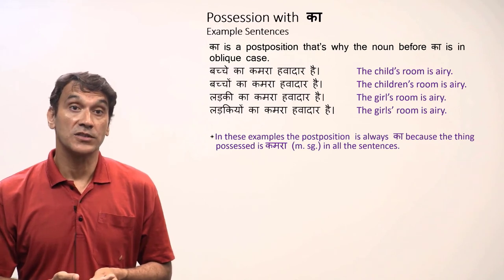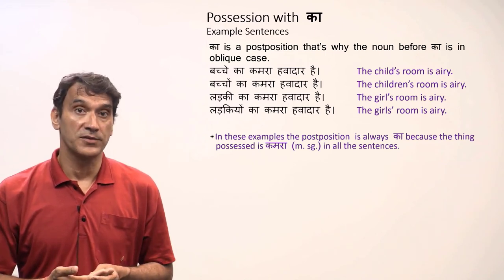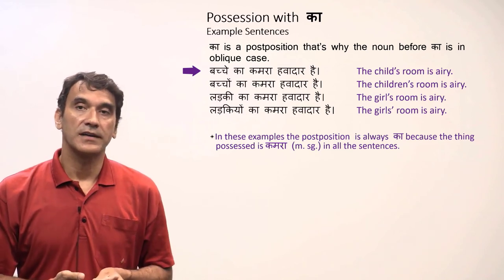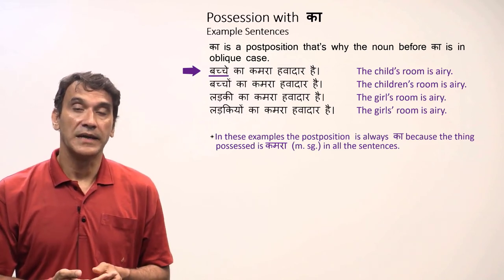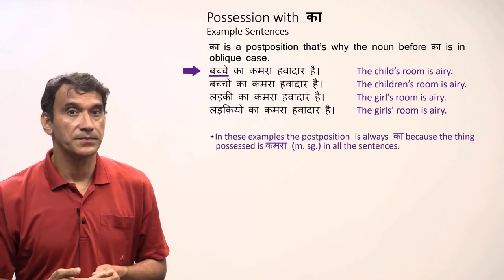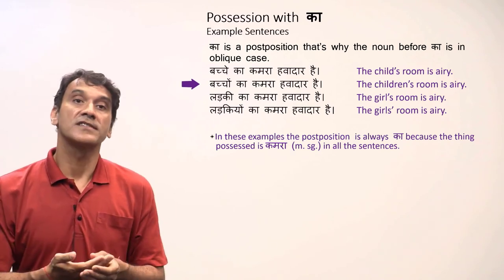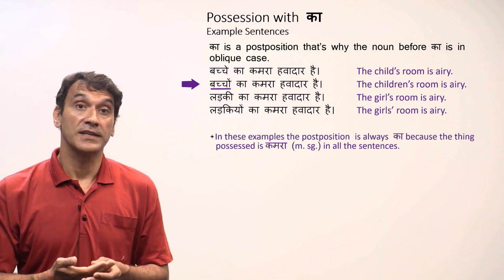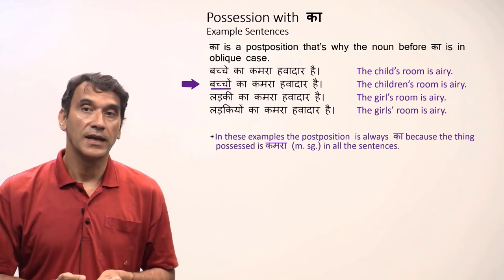Since 'ka' is a post position, the noun before it also declines. Bache ka kamra hawa dar hai — The child's room is airy. 'Bacha' becomes 'bache' because of the post position. Bacheon ka kamra hawa dar hai — The children's room is airy. It is plural, so it is 'bacheon': bacheon ka kamra.